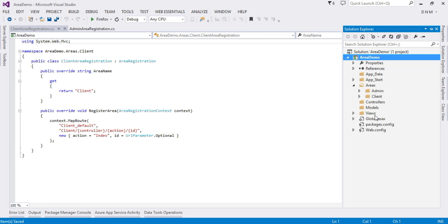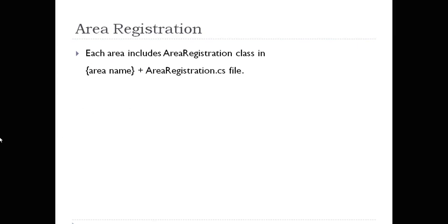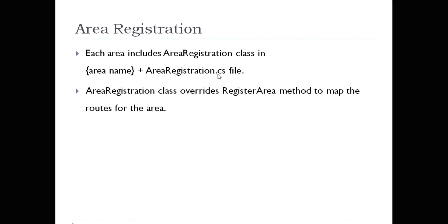Each area contains an area registration class, and the name of that class is nothing but your area name suffixed with the word AreaRegistration. This area registration class is required because it has a RegisterArea method that we override, and there we define the routes of our area.